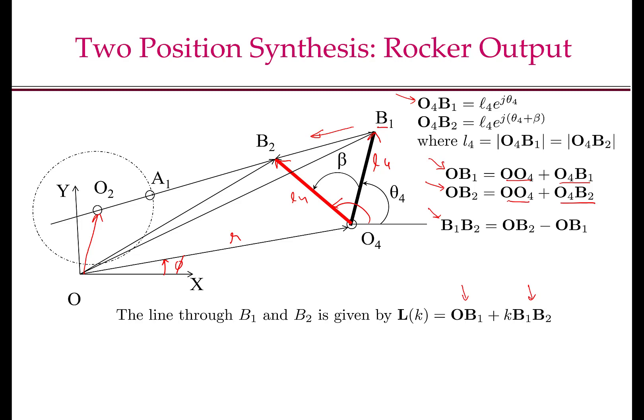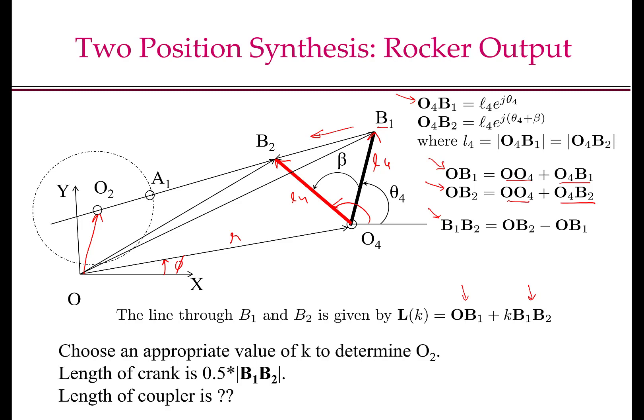Again, I remind you that the idea or the logic of the process is very similar to the graphical construction procedure that we did before. Now, the length of the crank, as we have seen before, is half of B1B2. So if we know the vector B1B2, we can get the magnitude of the vector B1B2 and multiply by half to get the length of the crank. The length of the coupler also can be obtained through vector algebra. And I will leave it to you as an exercise to compute the length of the coupler.